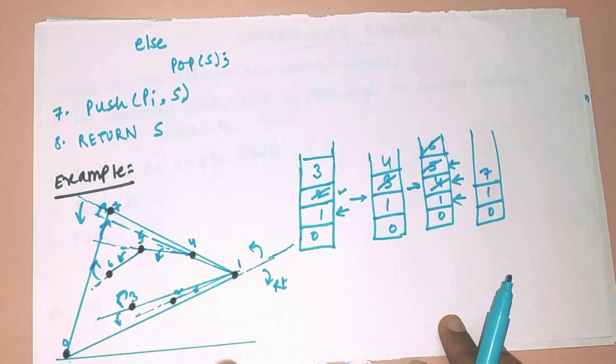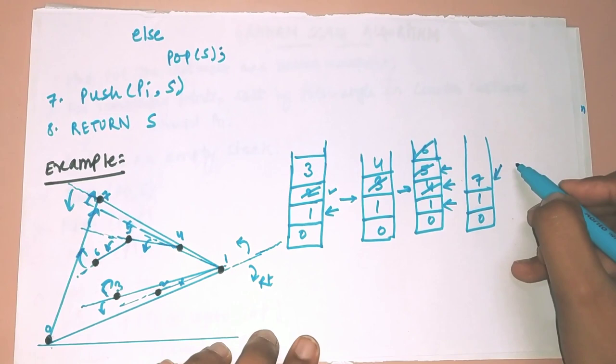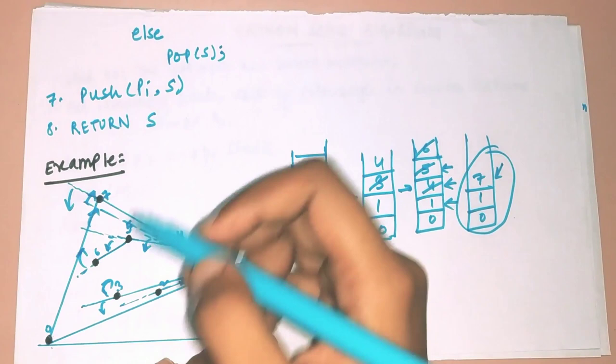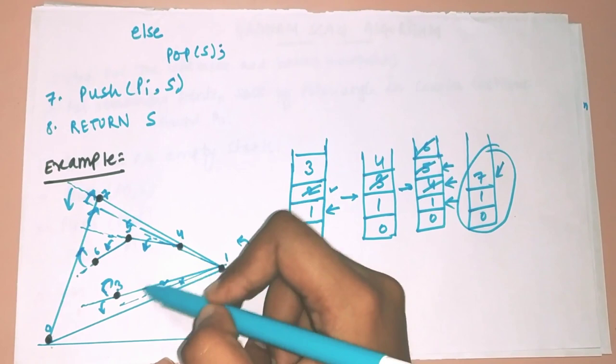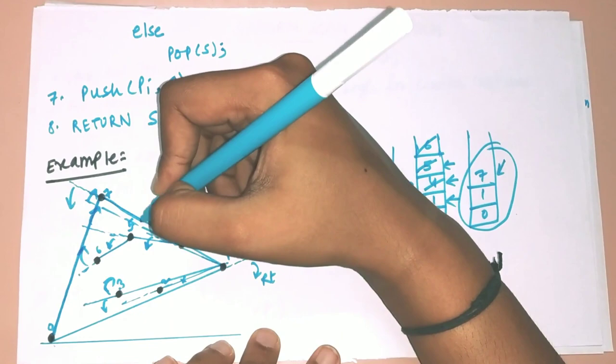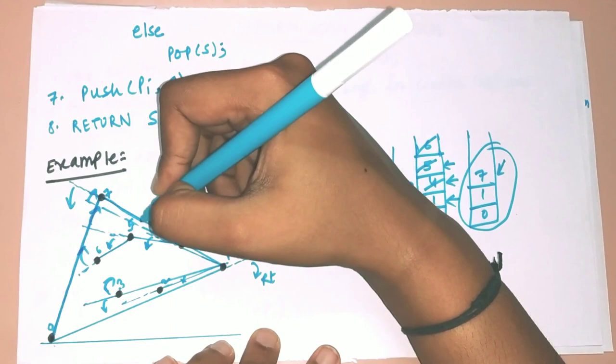In the last step we return the stack S, which tells us the points on the convex hull. My convex hull contains p0, p1, and p7 on the boundary. Points p2, p3, p4, p5, and p6 all lie inside this convex polygon. The highlighted polygon with p0, p1, and p7 is our final convex hull. This is how we find convex hull using the Graham Scan algorithm. Thank you!